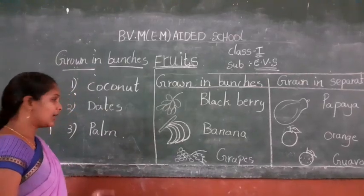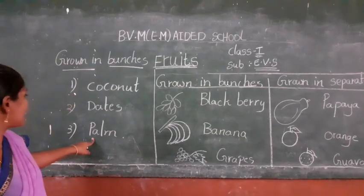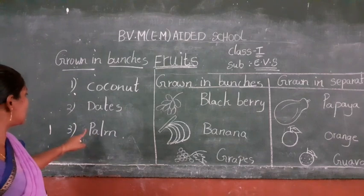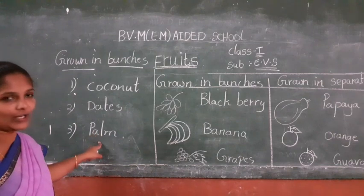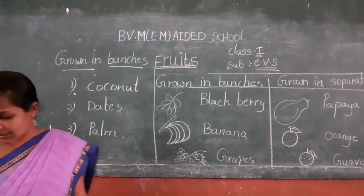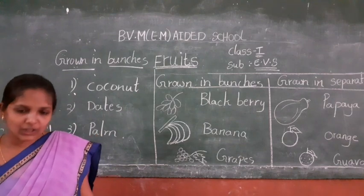Next, palm. Palm is also a fruit. It also grows in clusters.